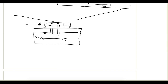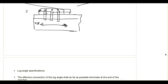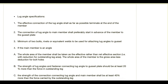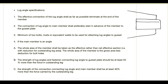Using lug angles requires more bolts and more connections, so nowadays they are not preferred. But let's review the specifications and design procedure given by the code. The first provision states that the effective connection of the lug angle shall, as far as possible, terminate at the end of the member — meaning the lug angle should end at or before the end of the main plate and should not extend beyond that point.